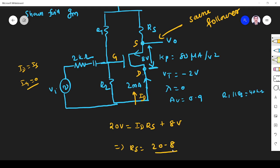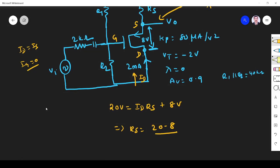So that drop is 20 volt is equal to ID times RS plus the drop, VS, which is 8 volt. So from there we can find what is our RS. RS equal to 20 minus 8 divided by ID. ID is 2 milliamps, so if we simplify we will get 6k.